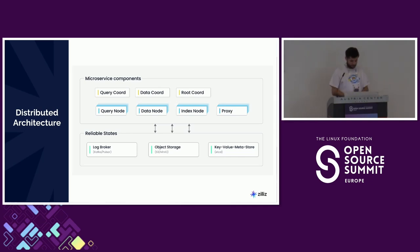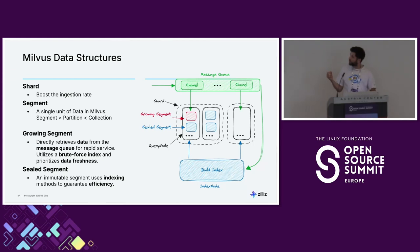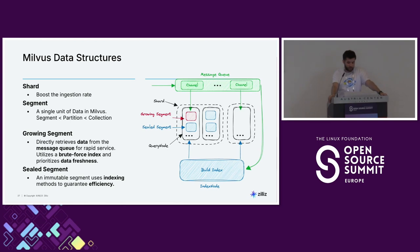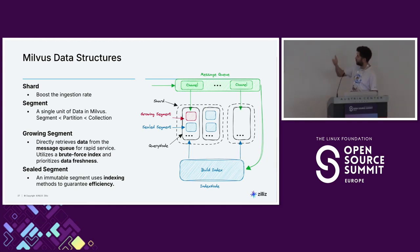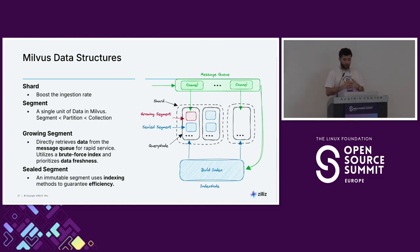Going into more detail on how Milvus works: everything is sharded by default, which distributes everything and allows a better ingestion rate. We have something called segments — a segment is just a unit of data in Milvus. A segment is within a partition, and a partition is within a collection. Data comes in from Kafka into a growing segment, which is data arriving in real time, and we build a brute-force index on it so we can query real-time data. Once you reach a certain threshold, it moves to a sealed segment, which is immutable — that's where we build the real indexes like HNSW.